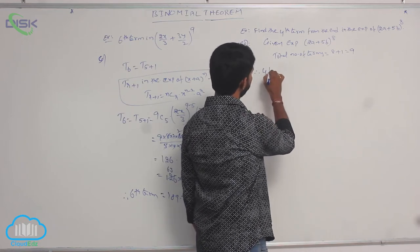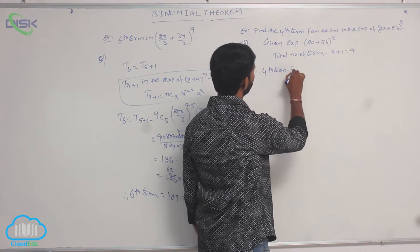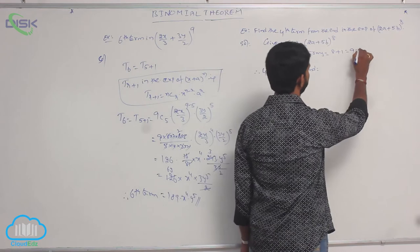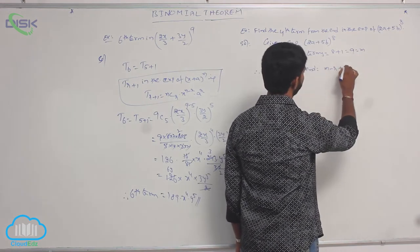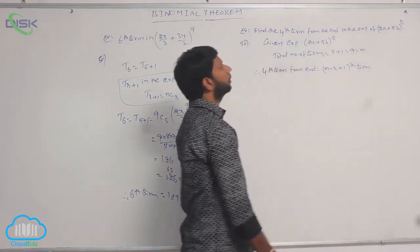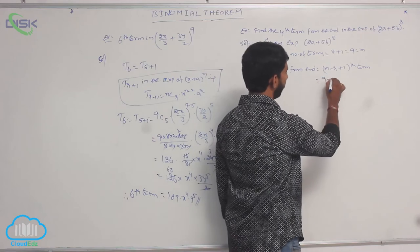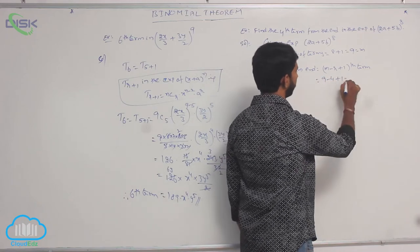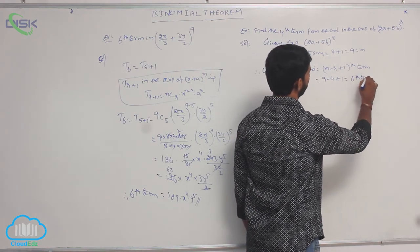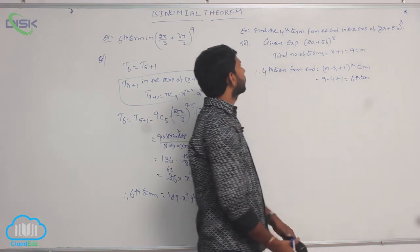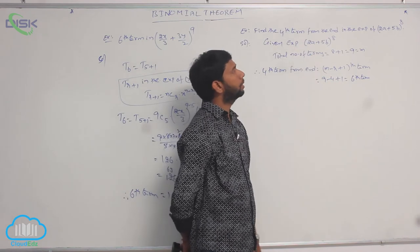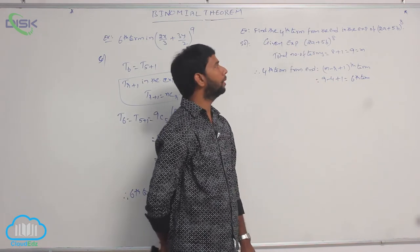The fourth term from the end is the (m − r + 1)th term, where m = 9 and r = 4. That is 9 − 4 + 1 = 6th term. So the sixth term is the fourth term from the end in the expansion of (2a + 5b)^8.